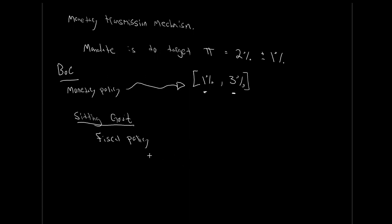Typically, governments engage in fiscal policy to close output gaps, but sometimes to create an output gap — to try to create jobs, push into an expansionary inflationary output gap for good times. Fiscal policy is the government's choice of government expenditure and taxation to achieve either political or economic goals. Governments can use fiscal policy just to achieve political goals — for example, they've promised to lower the unemployment rate, so they push up economic activity and GDP to cause unemployment to go down. That may not be economically ideal, but it's politically ideal for that political party.